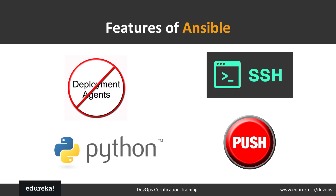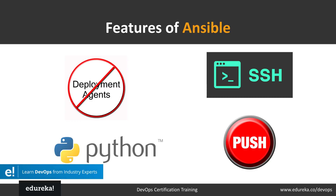The features of Ansible are: first, it is agentless — there's no agent software managing your nodes, unlike Puppet or Chef where you need to install a puppet agent or chef client. For Ansible, you just install it on your control machine. Second, it is built on top of Python, providing a lot of Python functionalities. Third, Ansible uses SSH for secure, passwordless network authentication — you just generate a public key on your control machine and copy it to your node machines.